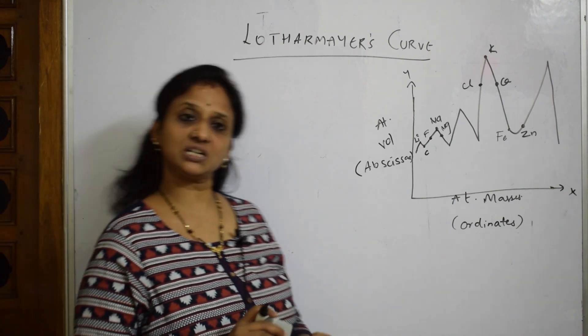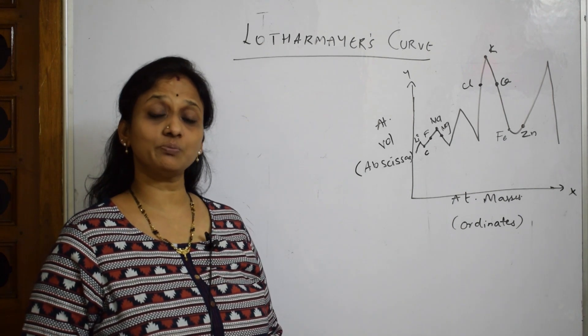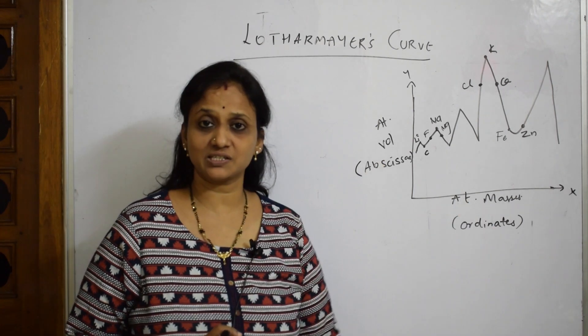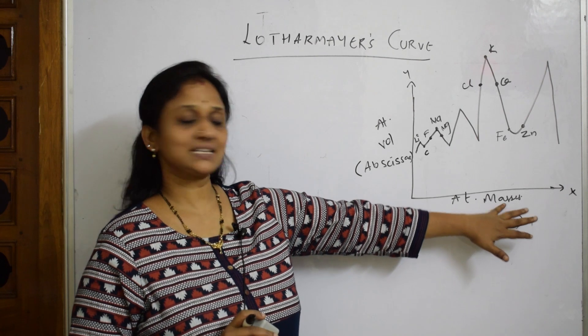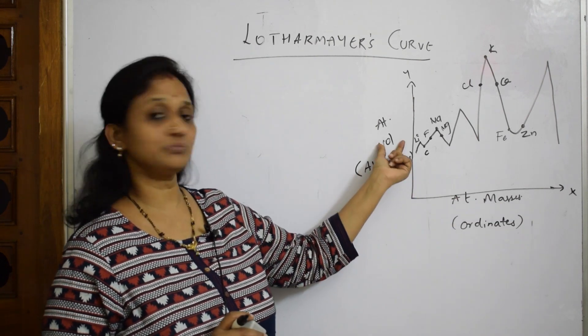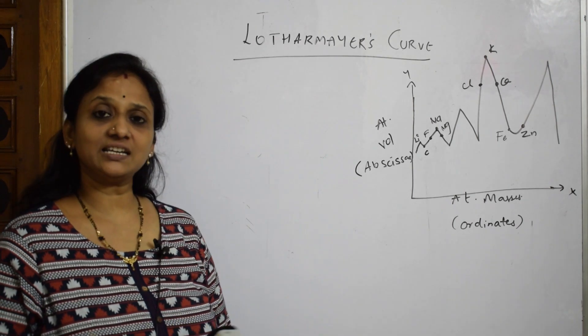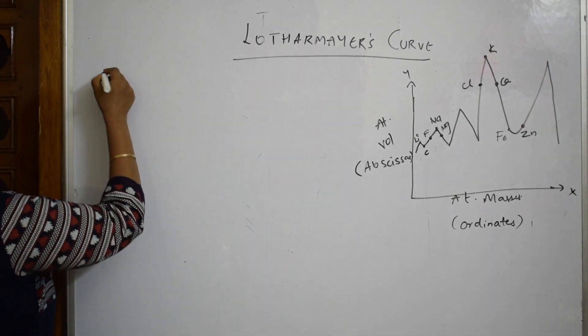He said whatever elements available at that time, he has picked up two important criteria that is atomic volume as well as atomic mass. Atomic mass was taken as x-axis as ordinate as well as atomic volume taken on the y-axis as abscissa. What he did is when he has arranged, he started arranging.